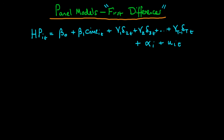In order to introduce this technique we need to refer to a particular model — the one we talked about in the last video. We're looking at how the crime rate in a given city i at time t affects house prices in that particular city at a particular point in time. We also included a range of time dependence which was essentially the same across all these different cities, by explicitly including dummy variables for each of these particular time periods.